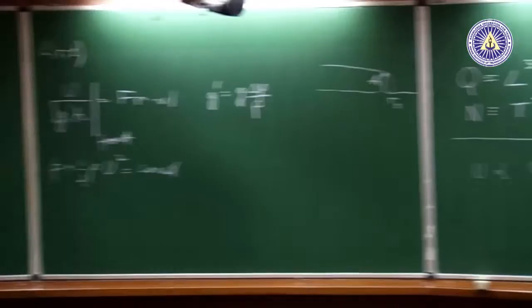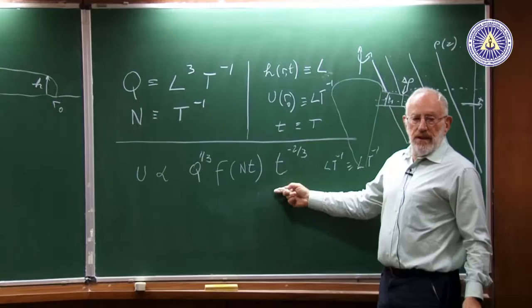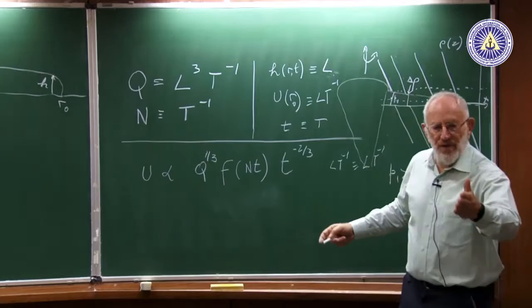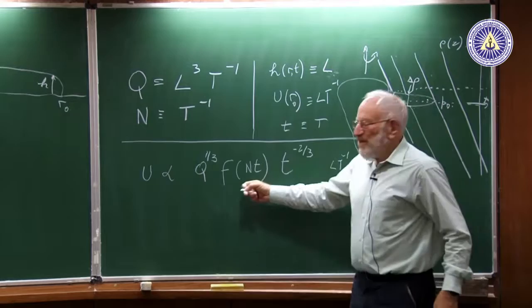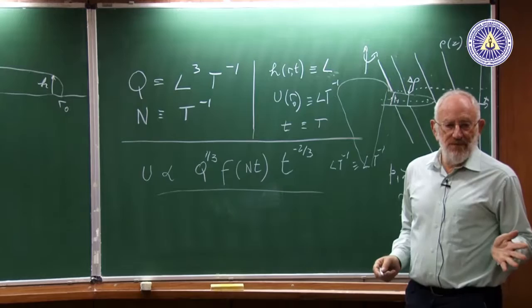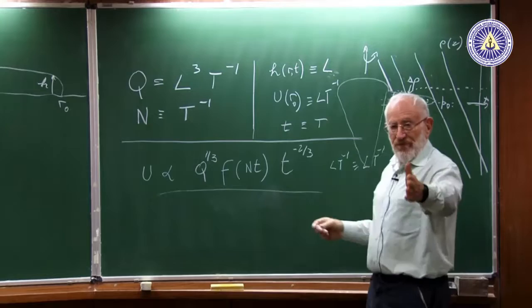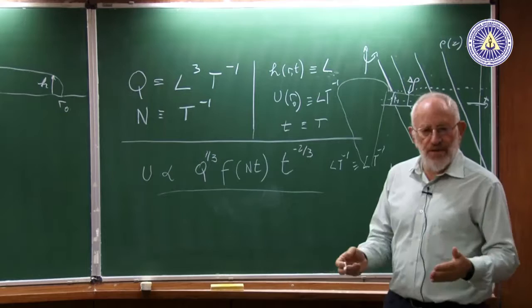The important point is that you can't get a unique solution from dimensional analysis alone, because the function f(Nt) could be anything. The answer must fit this form—as correctly stated—but dimensional analysis by itself doesn't tell you what f is. Physics alone won't tell you what f is either; you have to do something better. So: no unique solution from dimensional analysis.